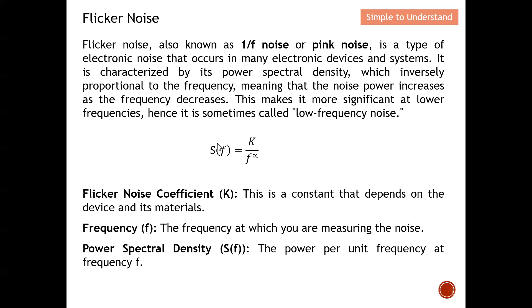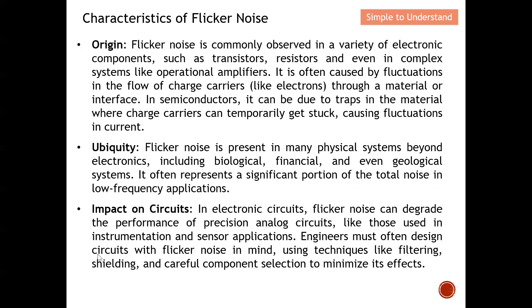The formula to calculate flicker noise power spectral density is S(f) = K / f^α. Here, K is the flicker noise coefficient — a constant that depends on the device and the material used. The frequency f is where you are measuring the noise, and the power spectral density gives the power per unit frequency at frequency f.